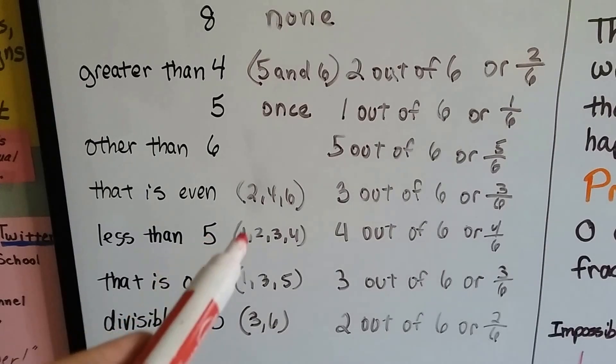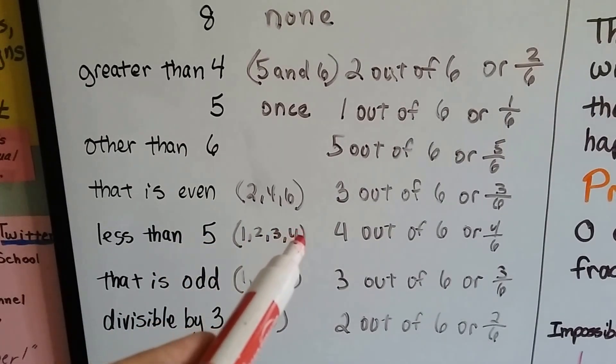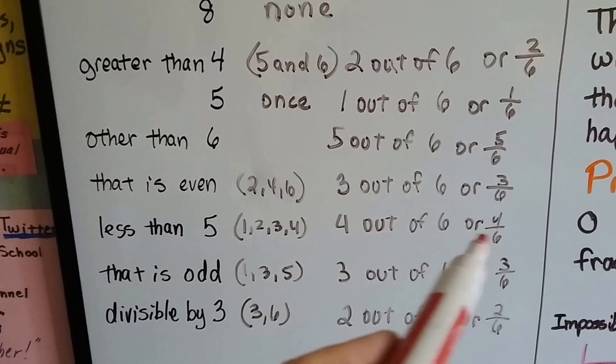The chance of it being less than a five? Then it would be a one, two, three, or four. There's four numbers, so it would be four out of six chance.